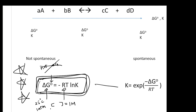Sometimes in your textbook you'll see the equation written differently: K equals exponential of negative delta G knot over RT. These two forms are equivalent — if you divide RT on both sides and take the exponential, one converts to the other. I suggest you memorize one, not both.